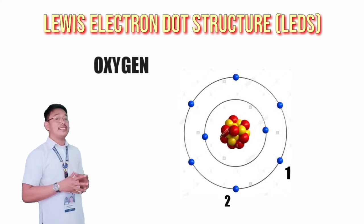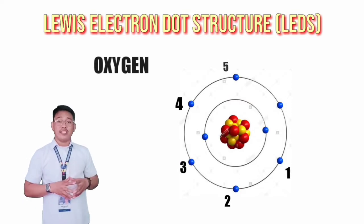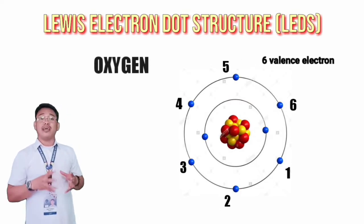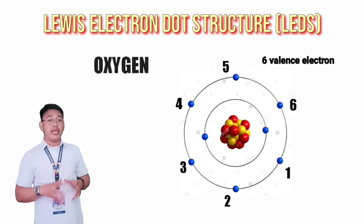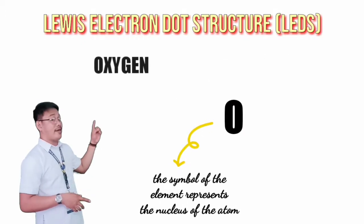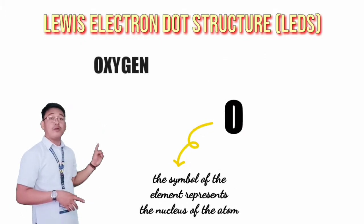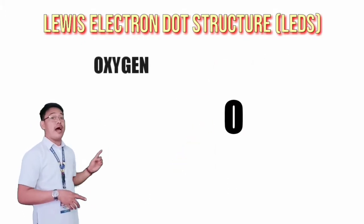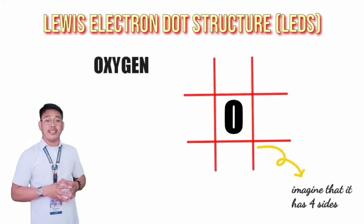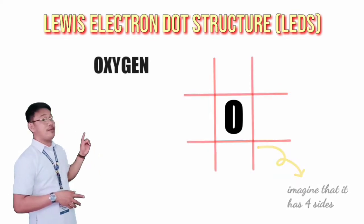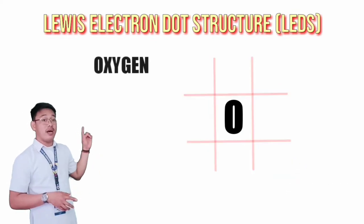Oxygen has 6 valence electrons. In writing the Lewis dot structure, imagine that the symbol of the element — which will represent the nucleus of the atom — has 4 sides. Then, we simply distribute the dots.